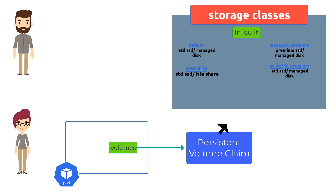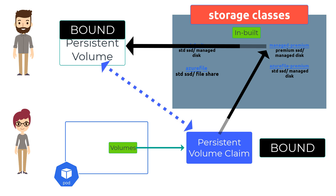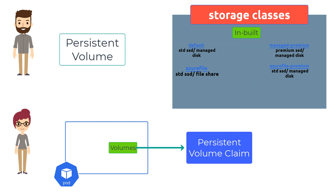Now that the persistent volume claim is referencing a storage class which is inbuilt, this storage class in turn will go ahead and create an appropriate matching persistent volume and will always bind the persistent volume it creates with the persistent volume claim that requested it. All of the inbuilt storage classes in AKS today have a reclaim policy of delete — that is, when the persistent volume claim is deleted, the persistent volume as well as the underlying storage is deleted. However, you can also create your own custom storage class if you need to, with a different reclaim policy and different variation.